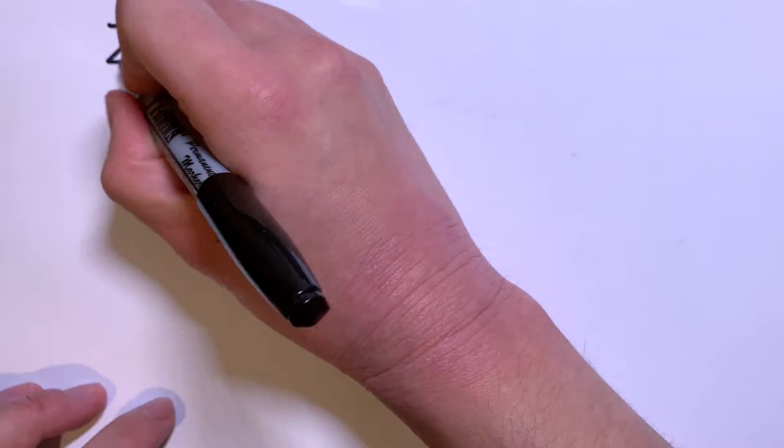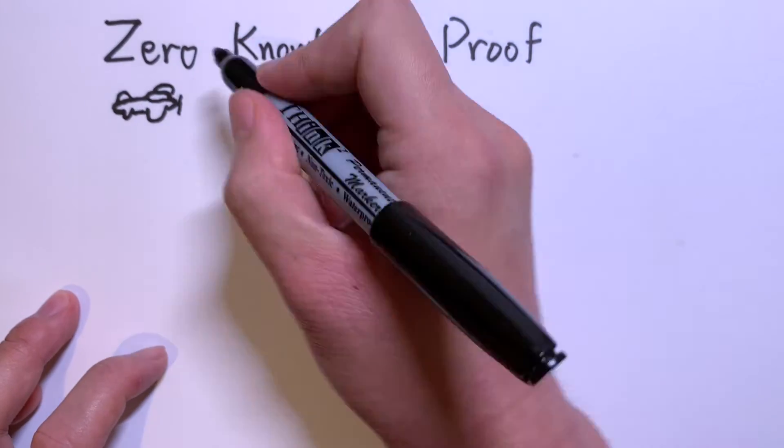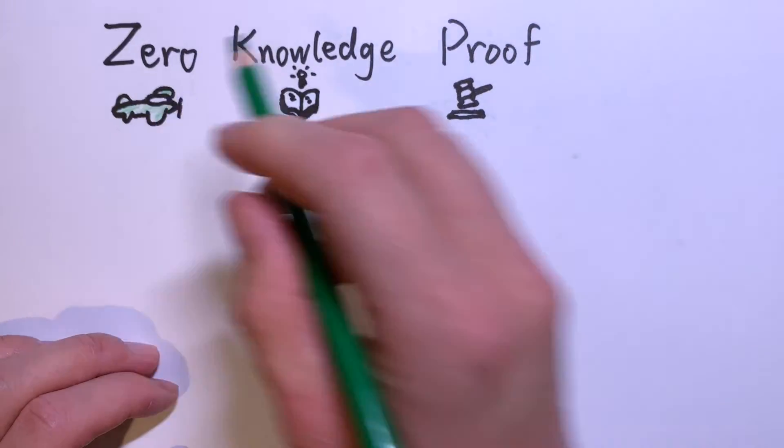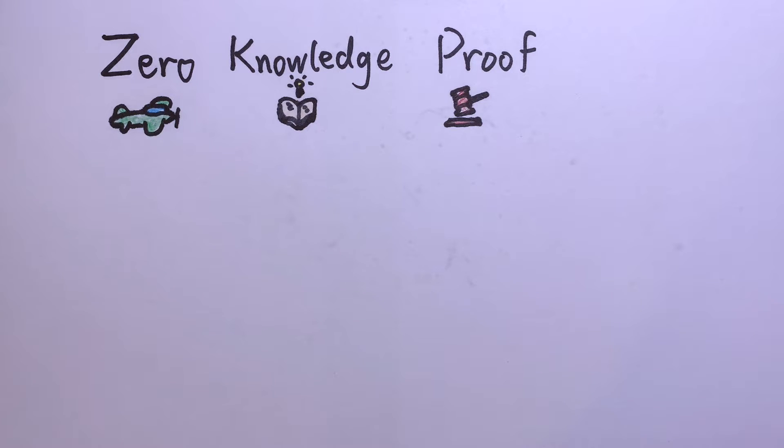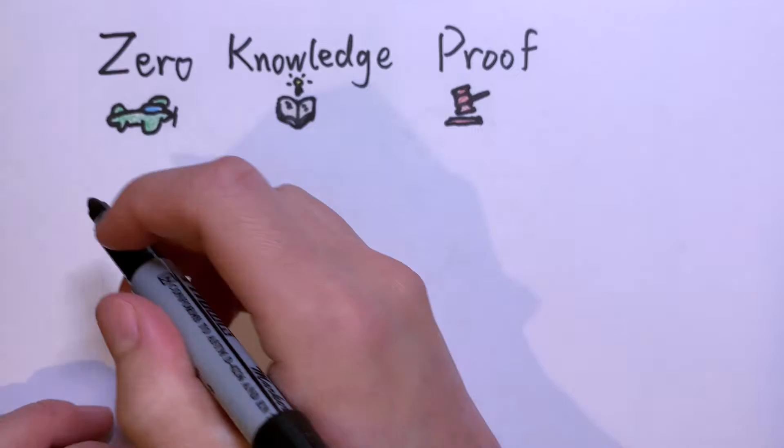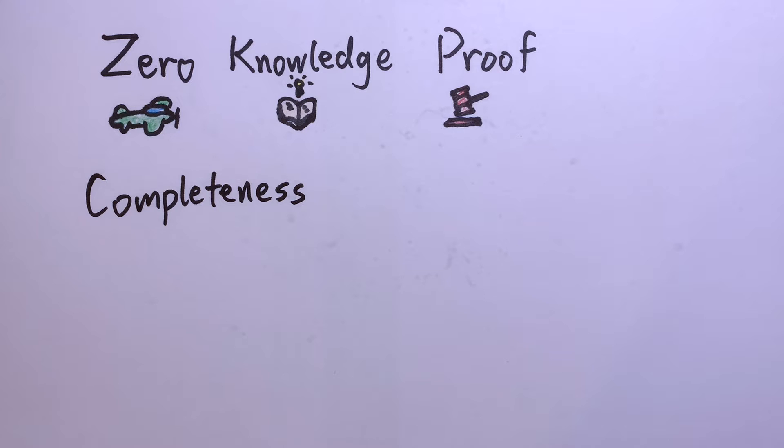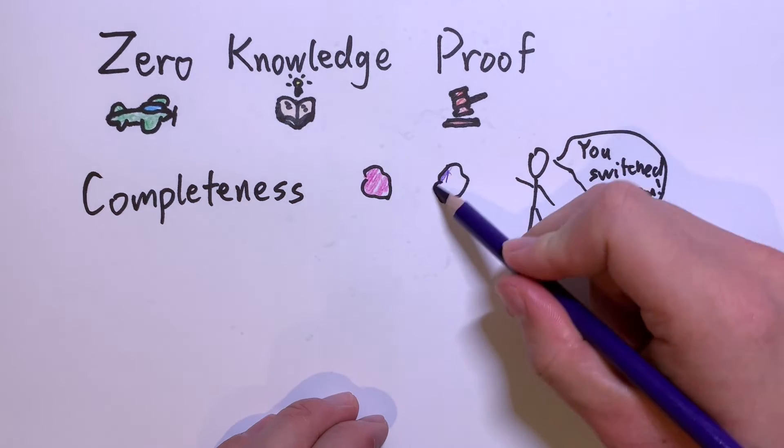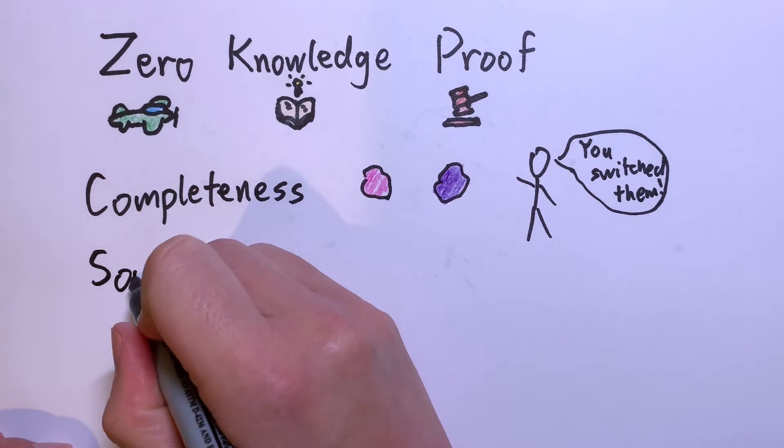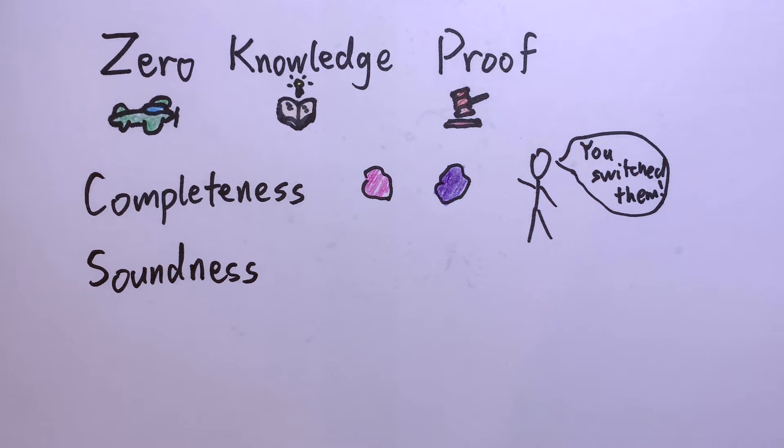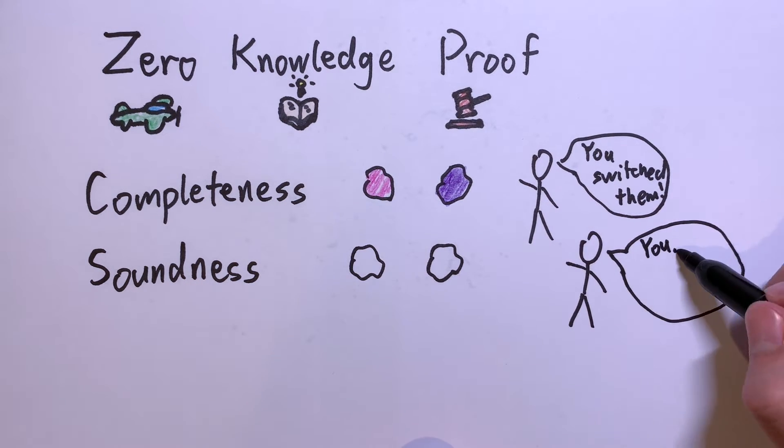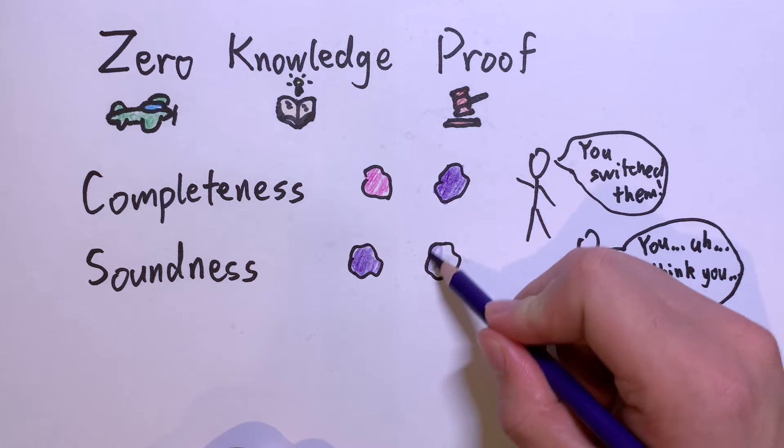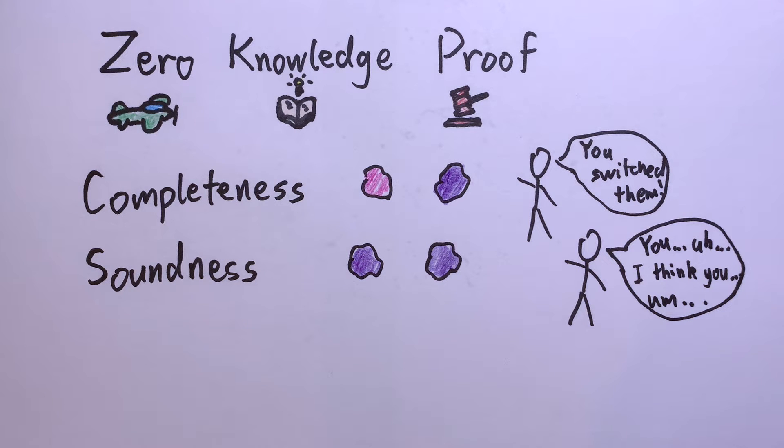In fact, this is an example of a zero-knowledge proof. It's a test between a prover and a verifier with three key properties. An honest prover will always pass the test. If the two flowers are indeed different colors, you will answer correctly every time. A malicious prover will fail the test with high probability. If the flowers are the same color, it is extremely unlikely you will answer correctly every single time.